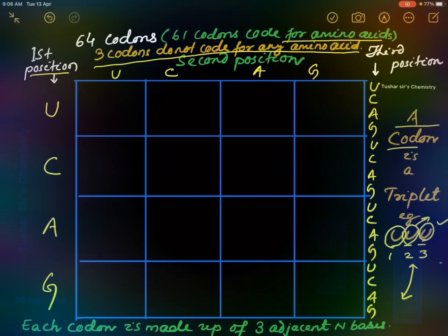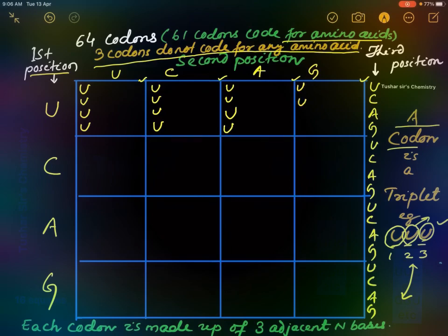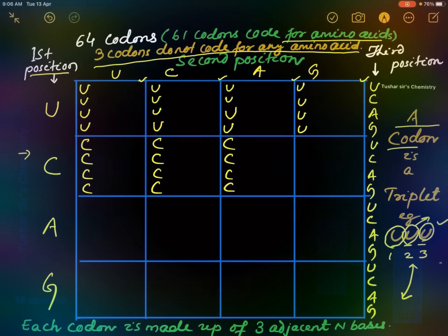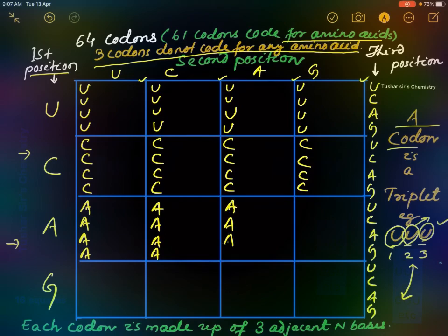Let us write the first positions in these four squares. We write U for the first sixteen squares, then C for the next four squares, then A for the following squares, and then G.